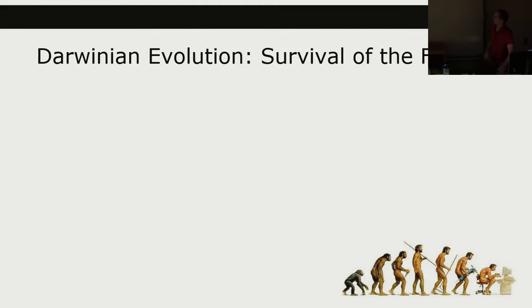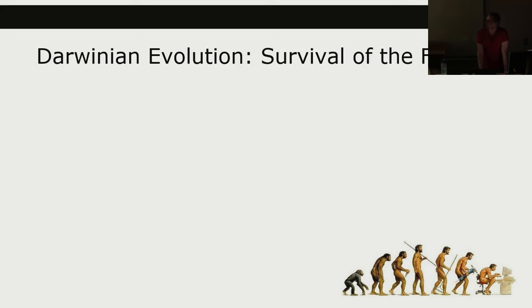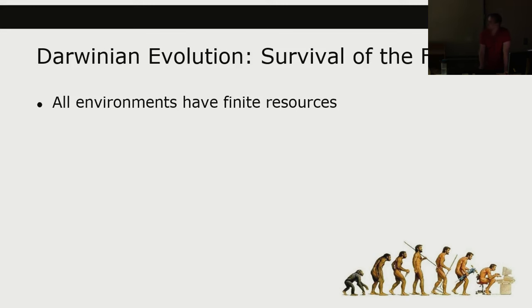Let's talk a little bit about evolution and what it is — there are a lot of misconceptions. Darwinian evolution, or survival of the fittest: all environments in the real world have finite resources. We all need to eat and there is only so much food; I want to reproduce and there are only so many possible mates; I want shelter and there is only so much land. There are a finite amount of resources.